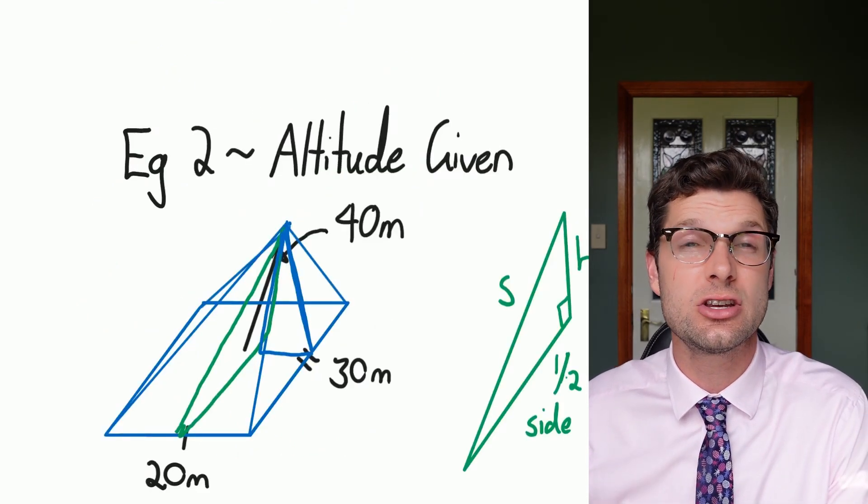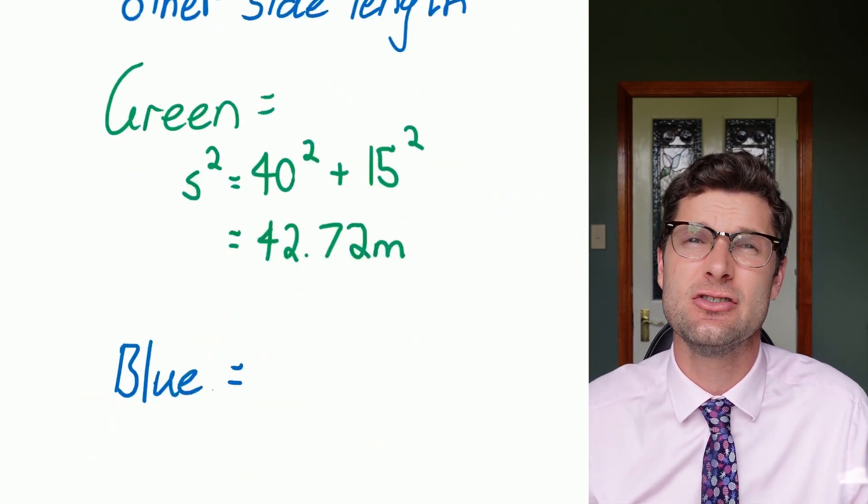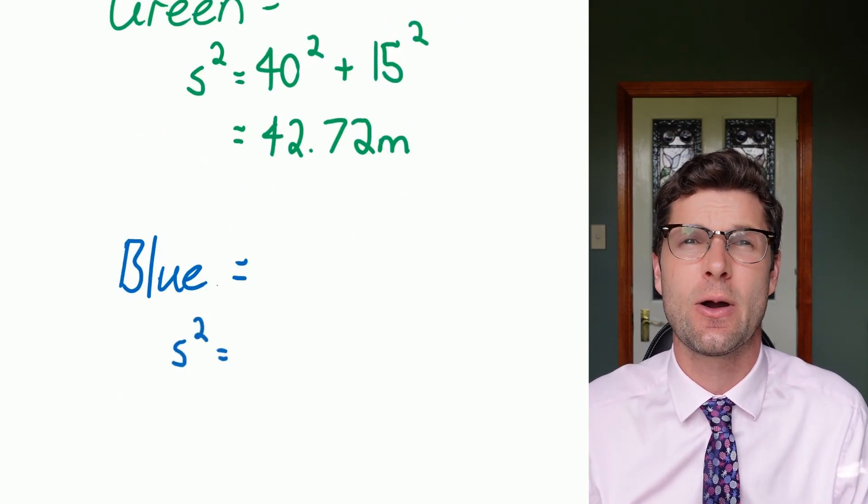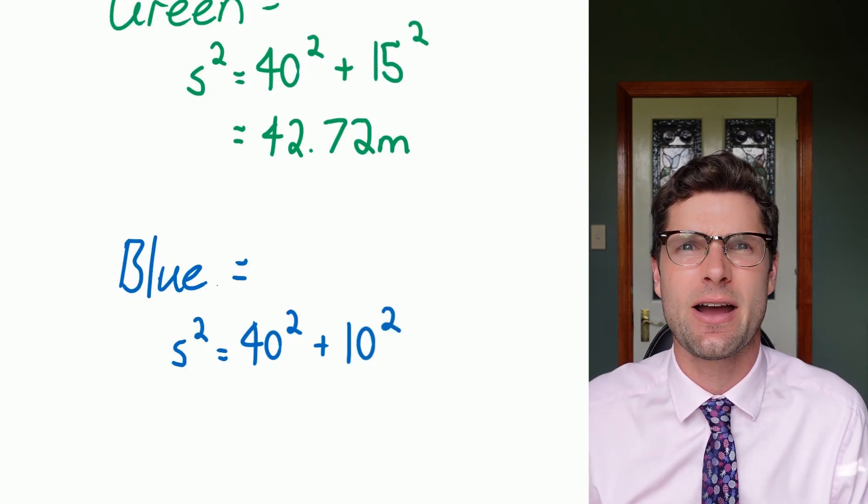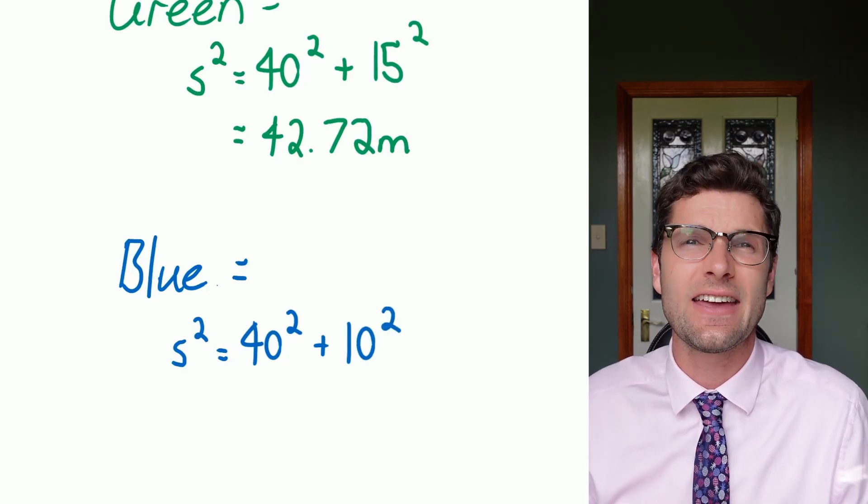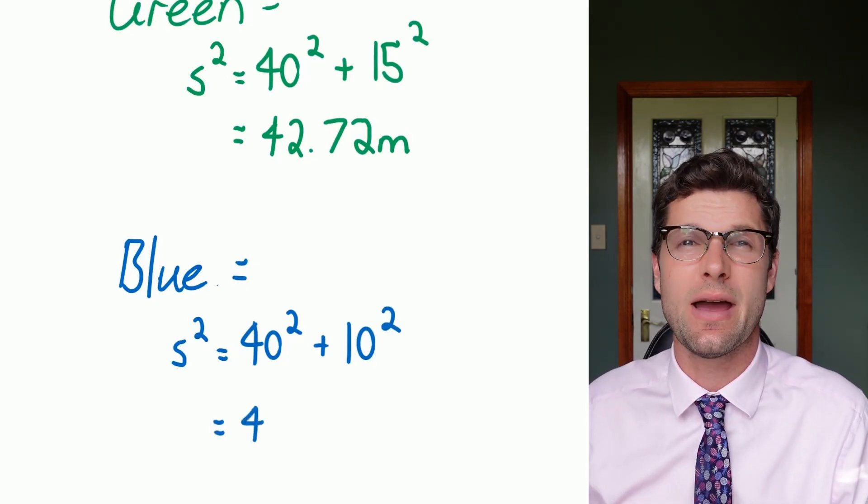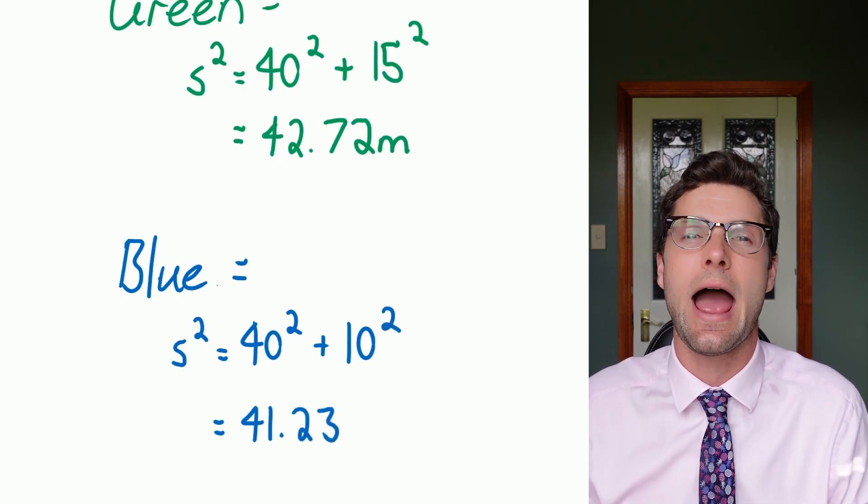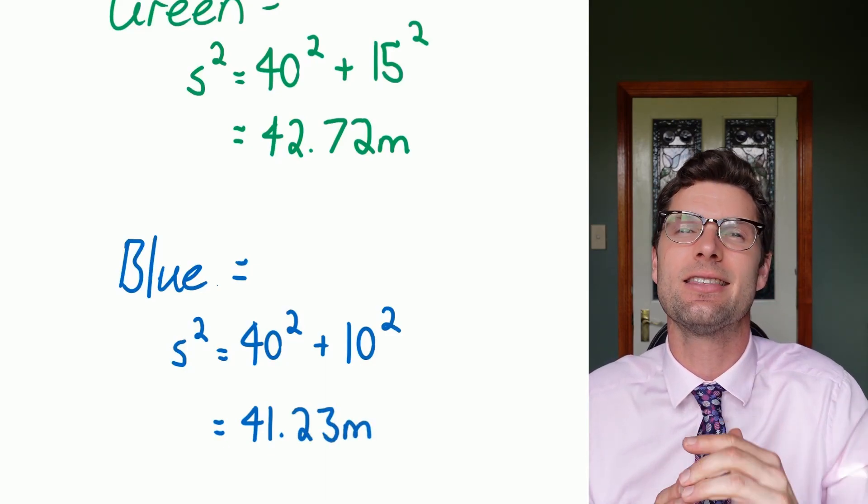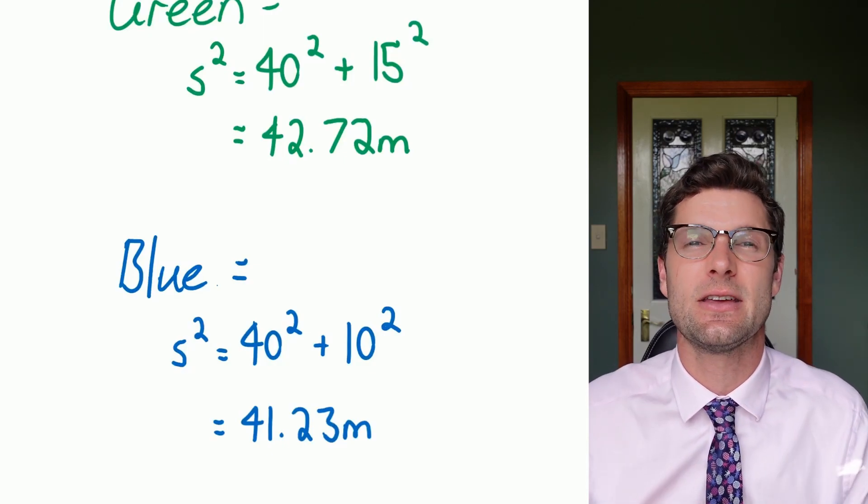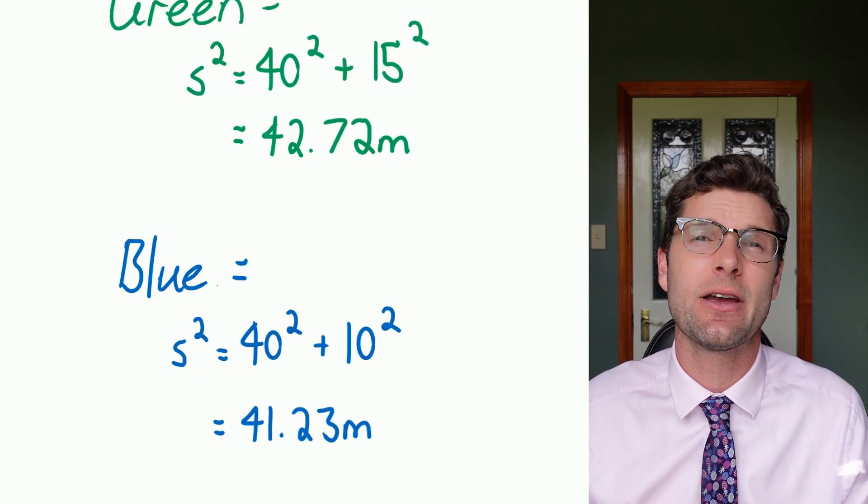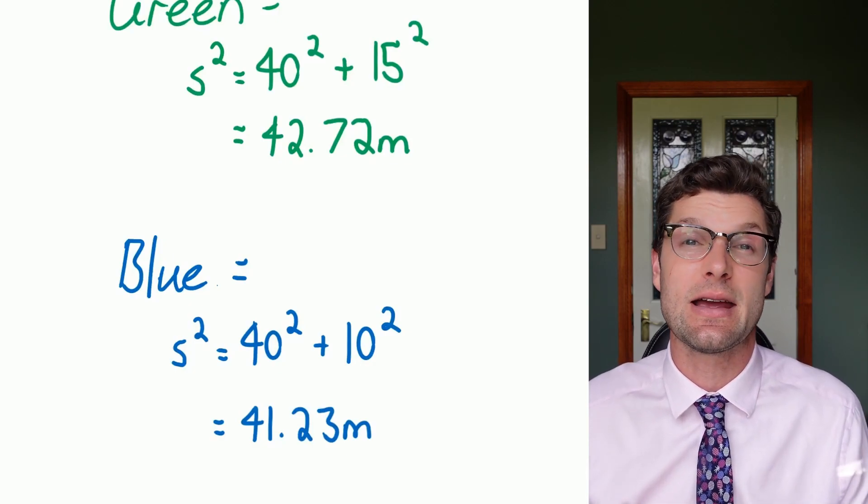And then to find the slant length of the blue side, which is going to be different, I have to use that 40 again, so I've got 40 squared, and this time I've got plus 10 squared. If I throw that into my calculator and square root the answer I get the number 41.23 meters. And this actually does usually happen, the longer side will have a shorter slant length and then the shorter side will have a longer slant length. So that's something just to check up on as you're going just to make sure that this does make sense.